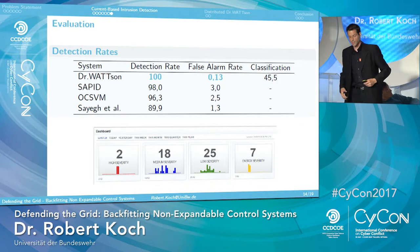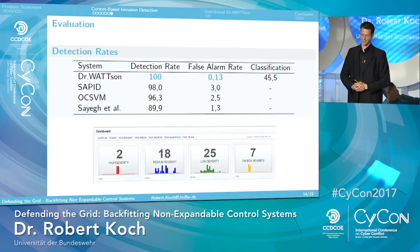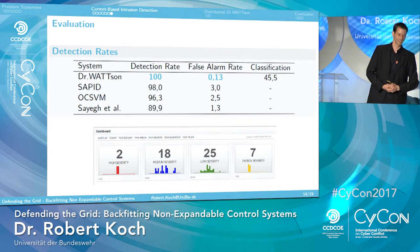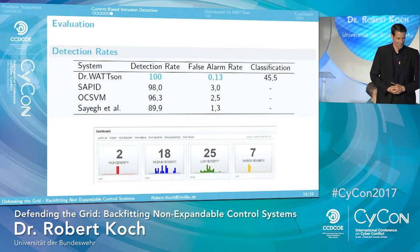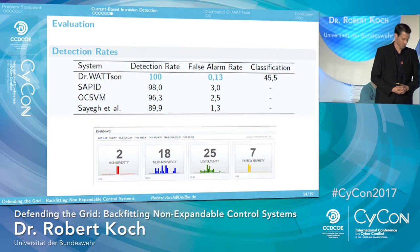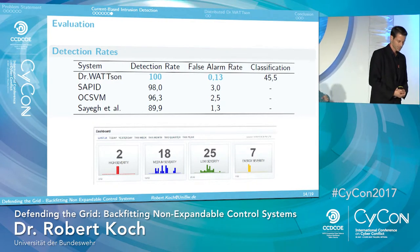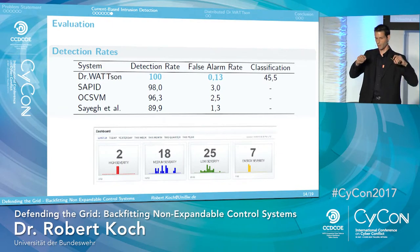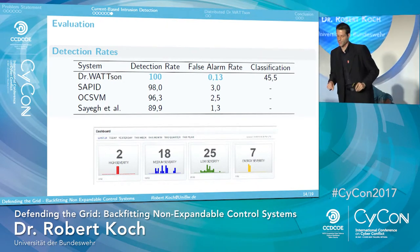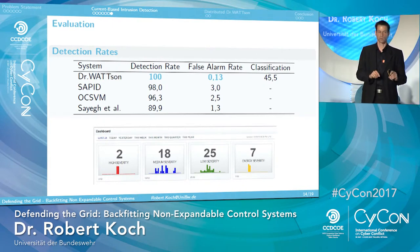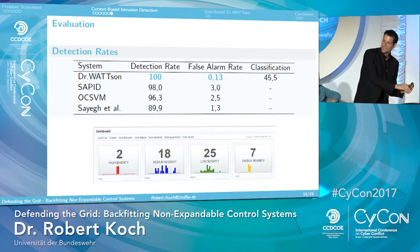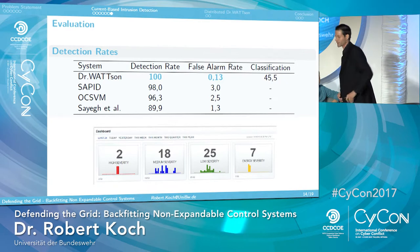Looking at the detection rates — there is a nice story behind that. When my students did the evaluation they called me on a Friday night around midnight, quite panicking, saying 'We have a very big problem — the values are too good.' I teach intrusion detection and when you have behavior-based detection and you see 100%, something is going wrong. For example, if you're using neural networks and get 100% detection rate, the network is overfitted — it functions well in the test scenario, but real-world detection rates drop dramatically. We discussed this a lot, did additional measurements, and finally confirmed: yes, in that case we really did have 100% detection rate.